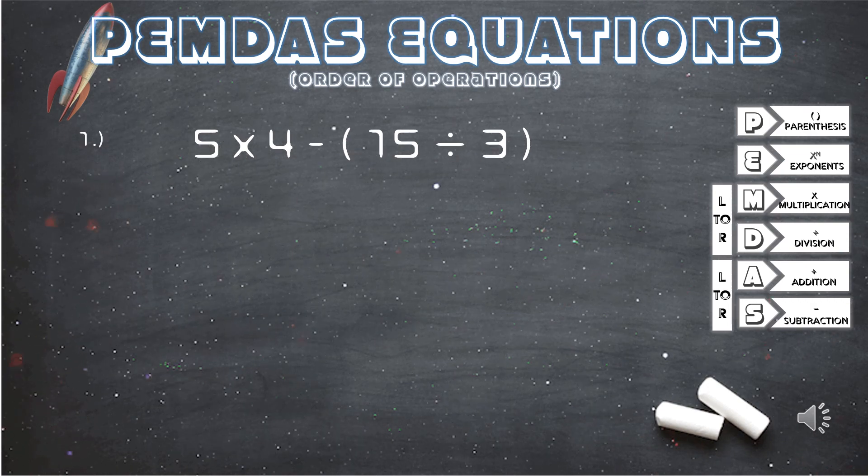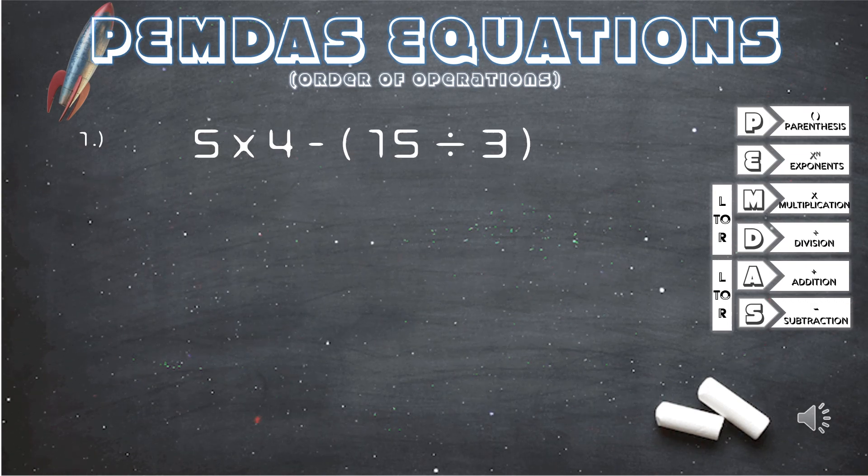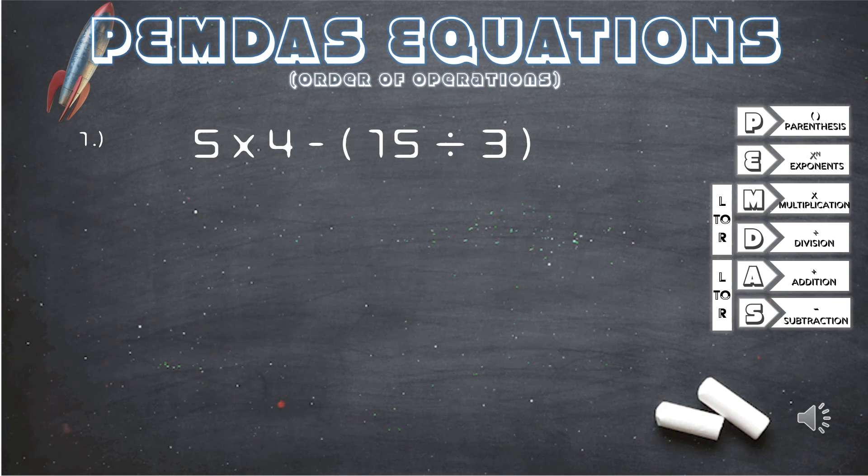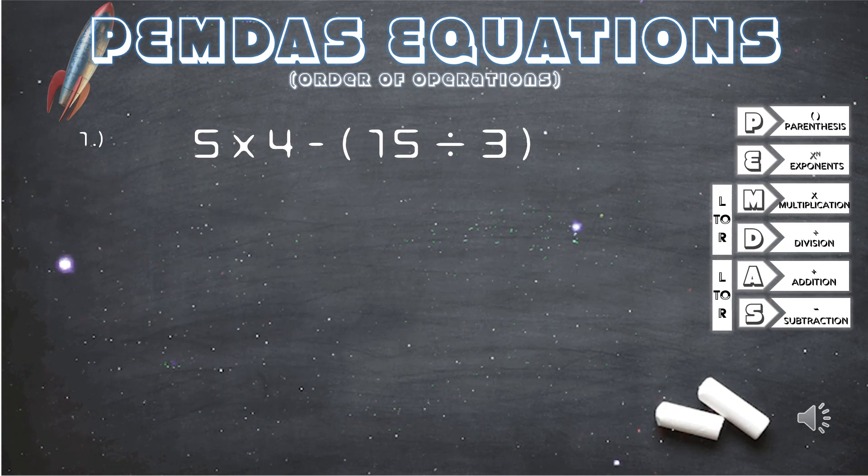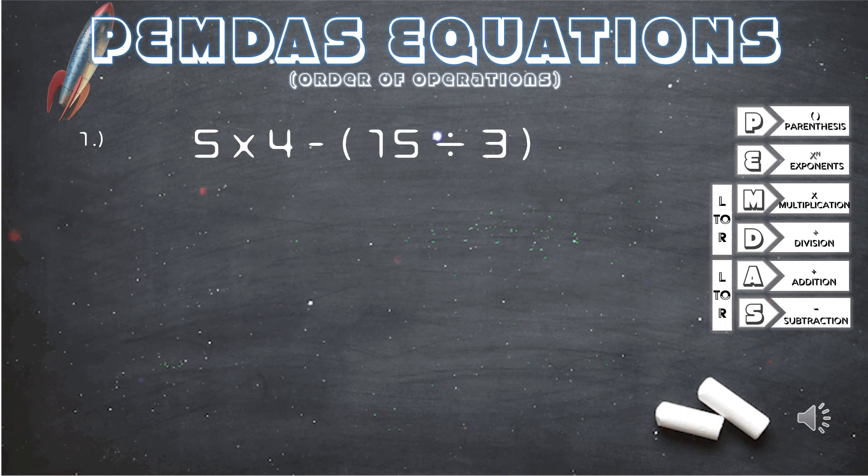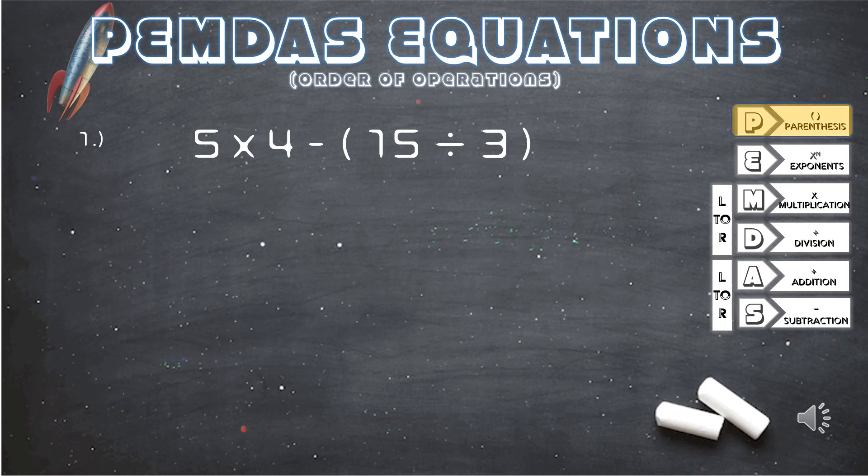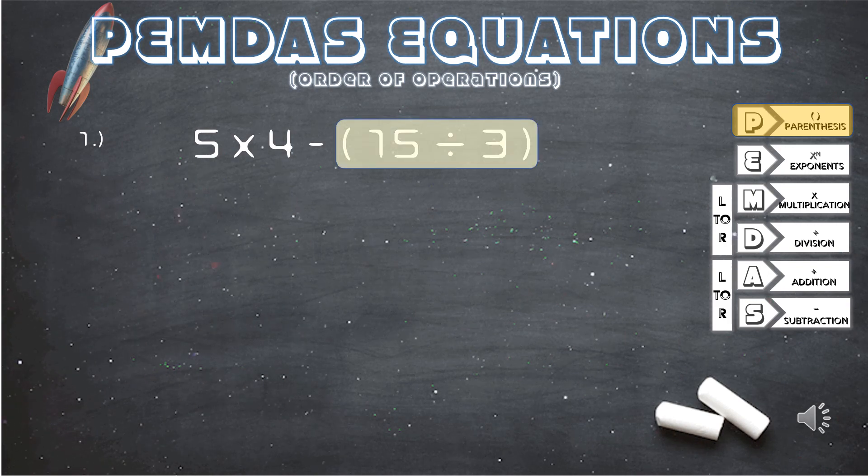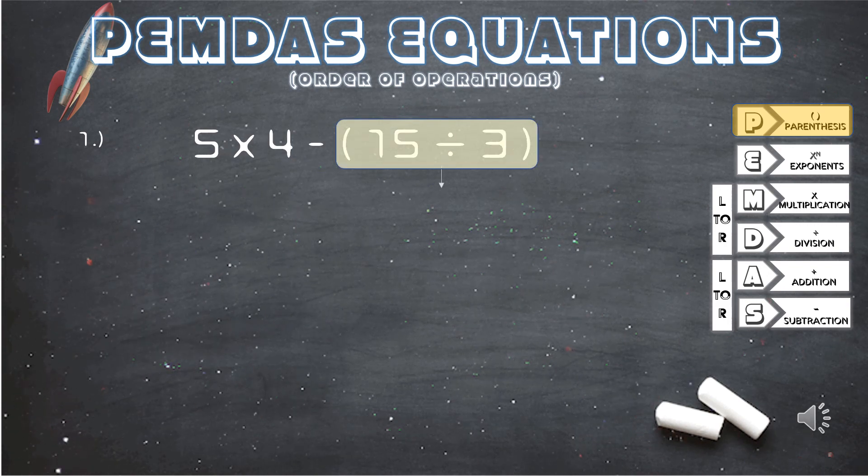For our first equation, we have 5 times 4 minus parentheses 15 divided by 3 parentheses. Using the PEMDAS guide on our right, the equation in the parentheses is what we will be solving first. 15 divided by 3, and that gives us 5.